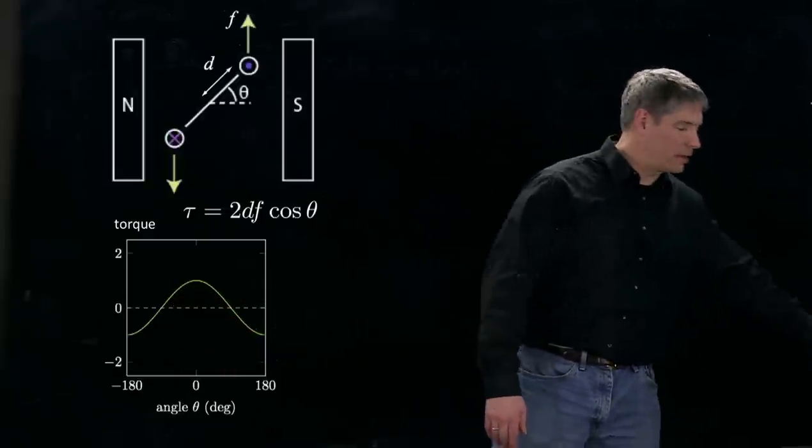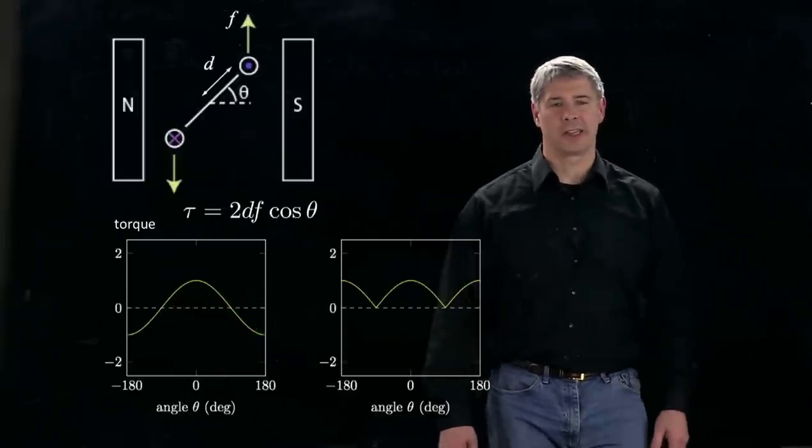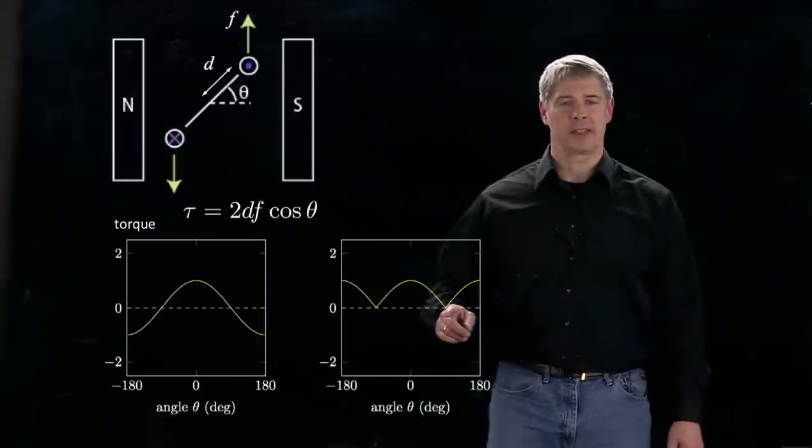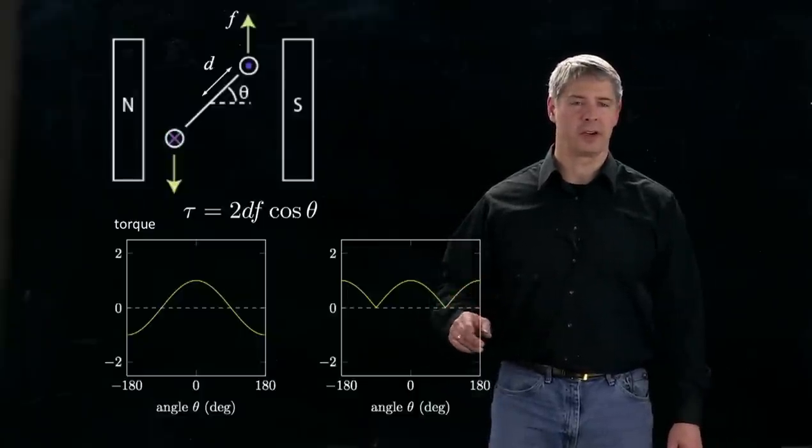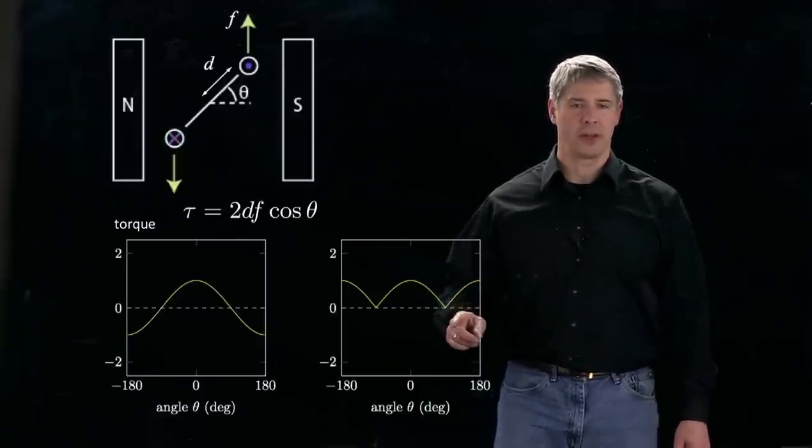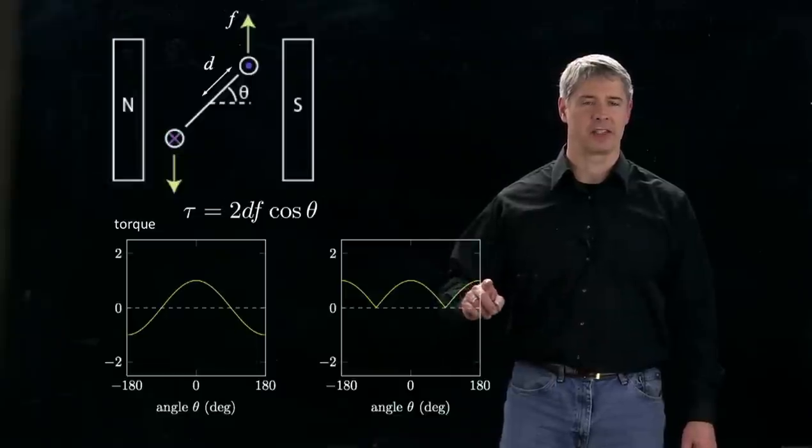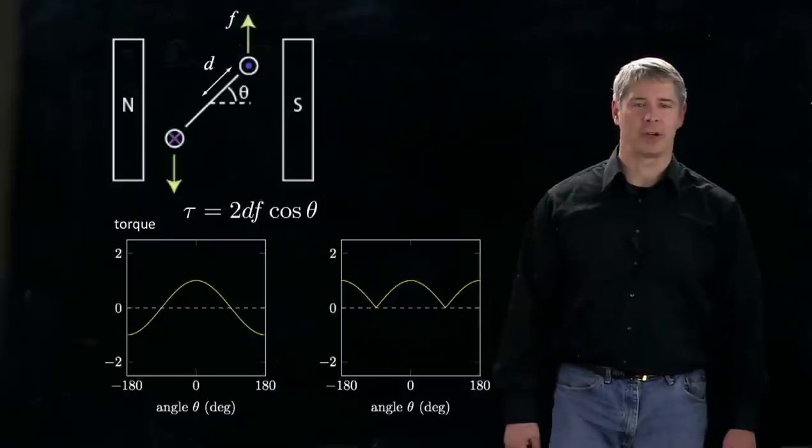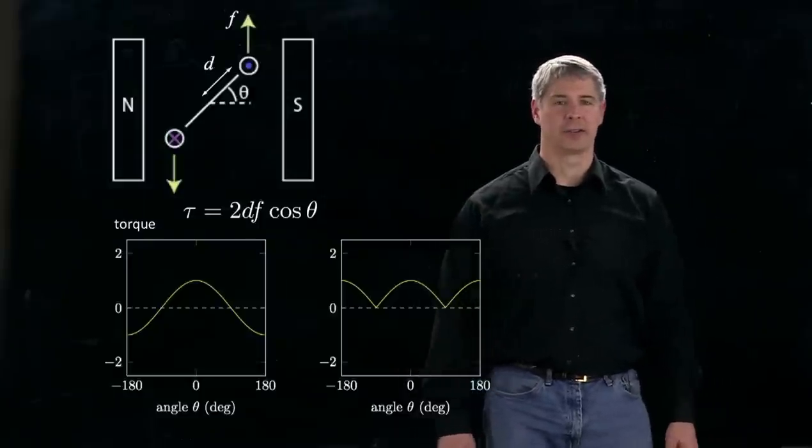If we plot the torque then we see it looks like this. Since we're switching the direction of the current, we switch the direction of the torque, and that part that was negative here now becomes positive, so we get positive torque or non-negative torque at all angles of the motor.